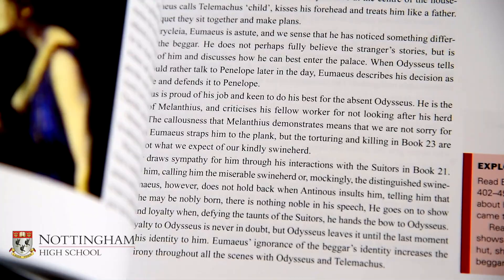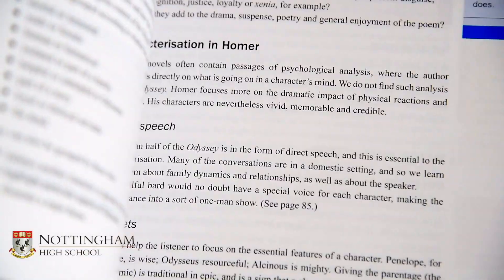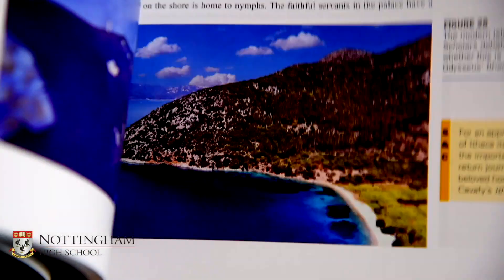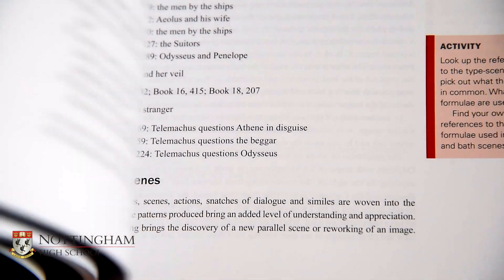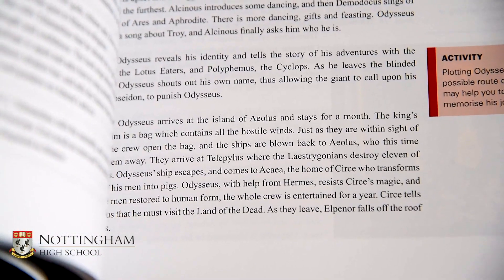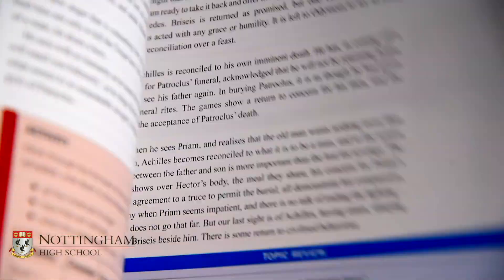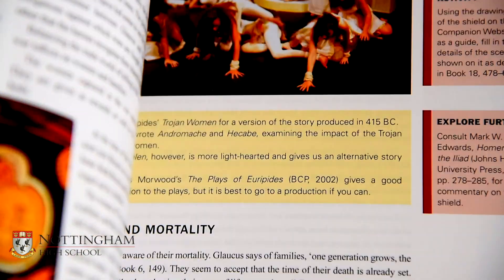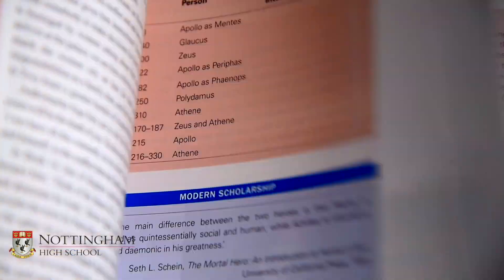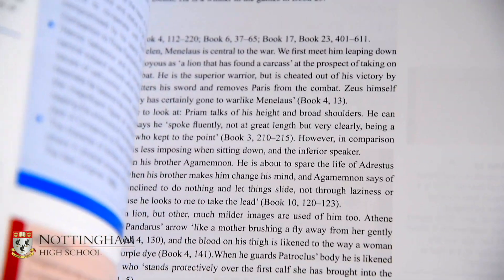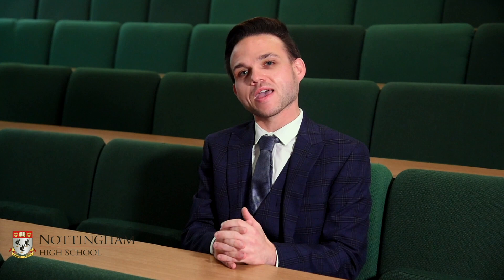In the latter half of year 12 and the rest of year 13 we will study Virgil's Aeneid, a poem also looking at the aftermath of the Trojan War but this time from the perspective of the Trojan Prince Aeneas. Here he travels via Carthage to Italy to found what will become the Roman Empire.